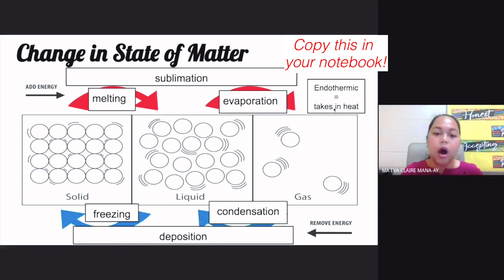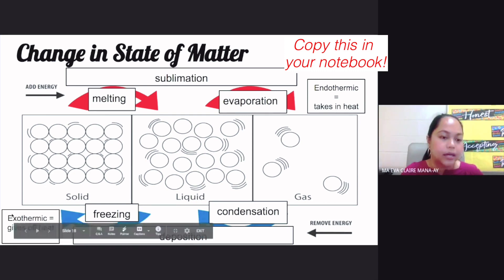Now, the opposite, for your blue arrows, you use the term exothermic. Exo in science means going outside. And, of course, thermic means heat or energy. So when you say exothermic reaction or exothermic process, that means it gives off heat.